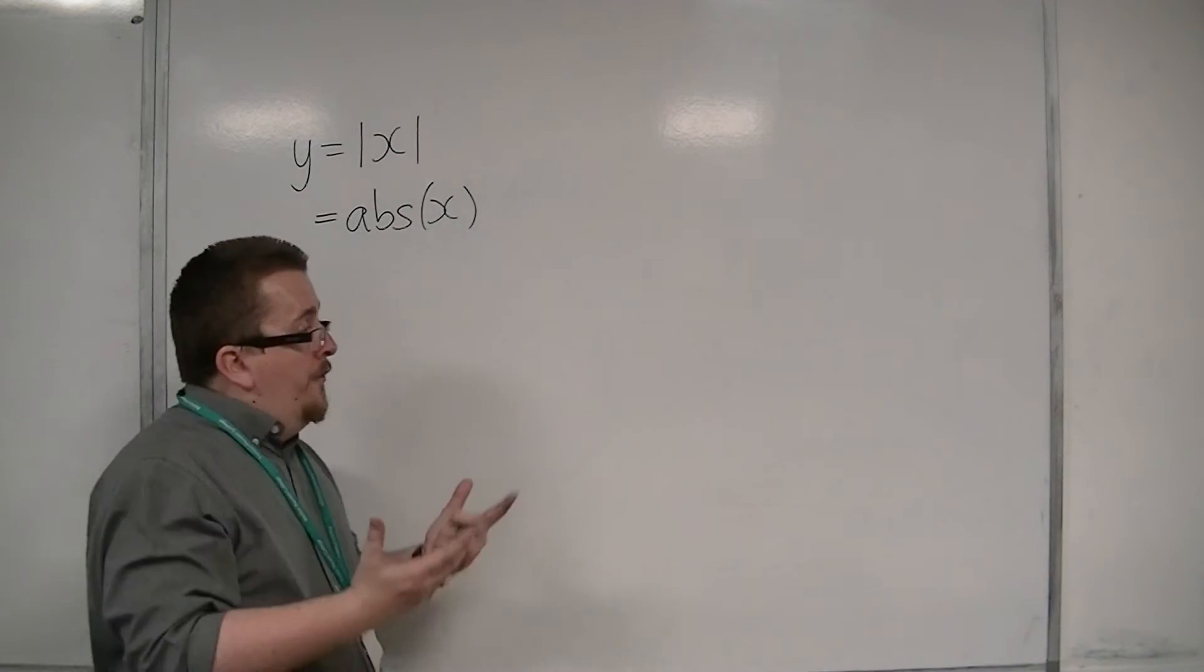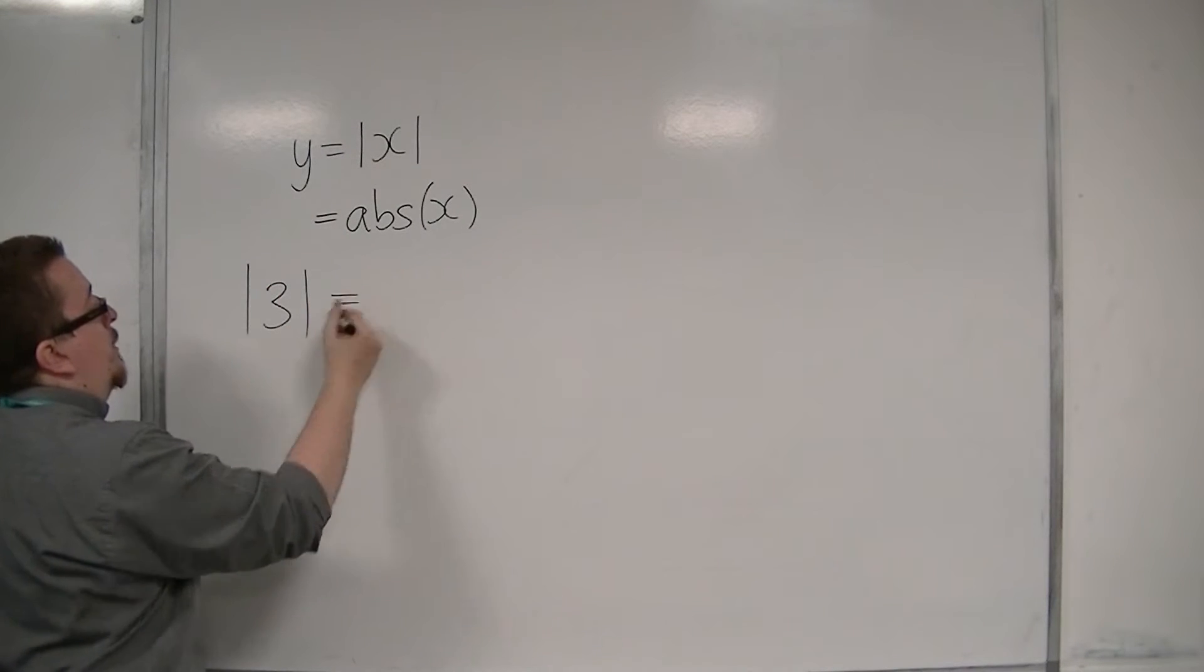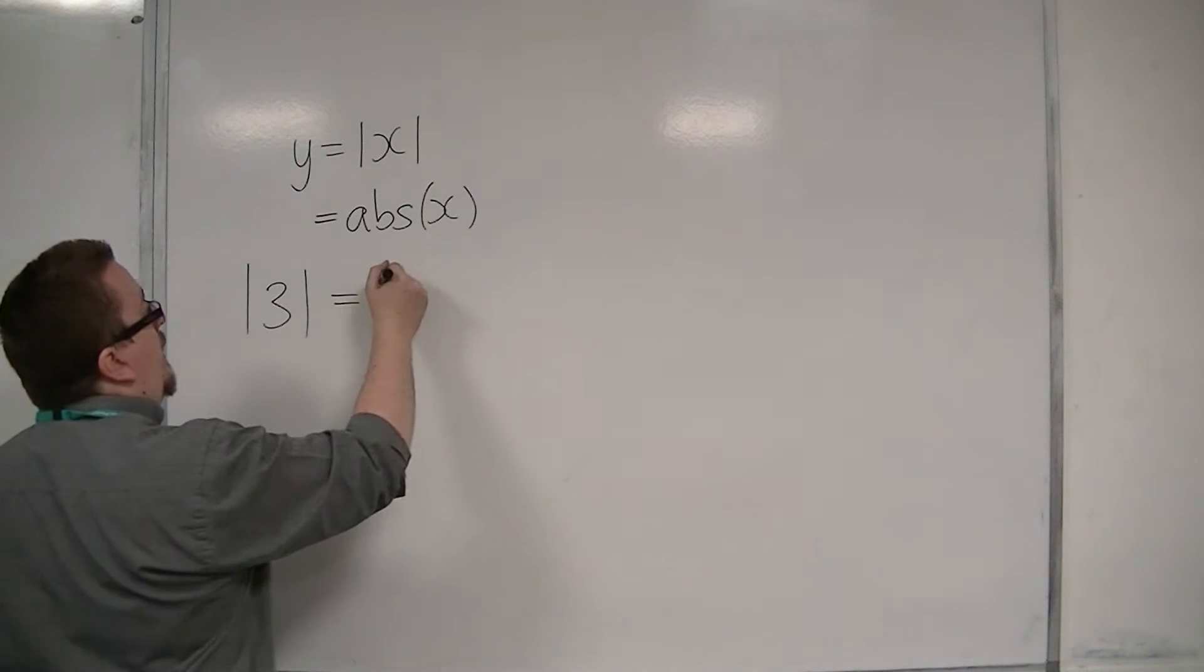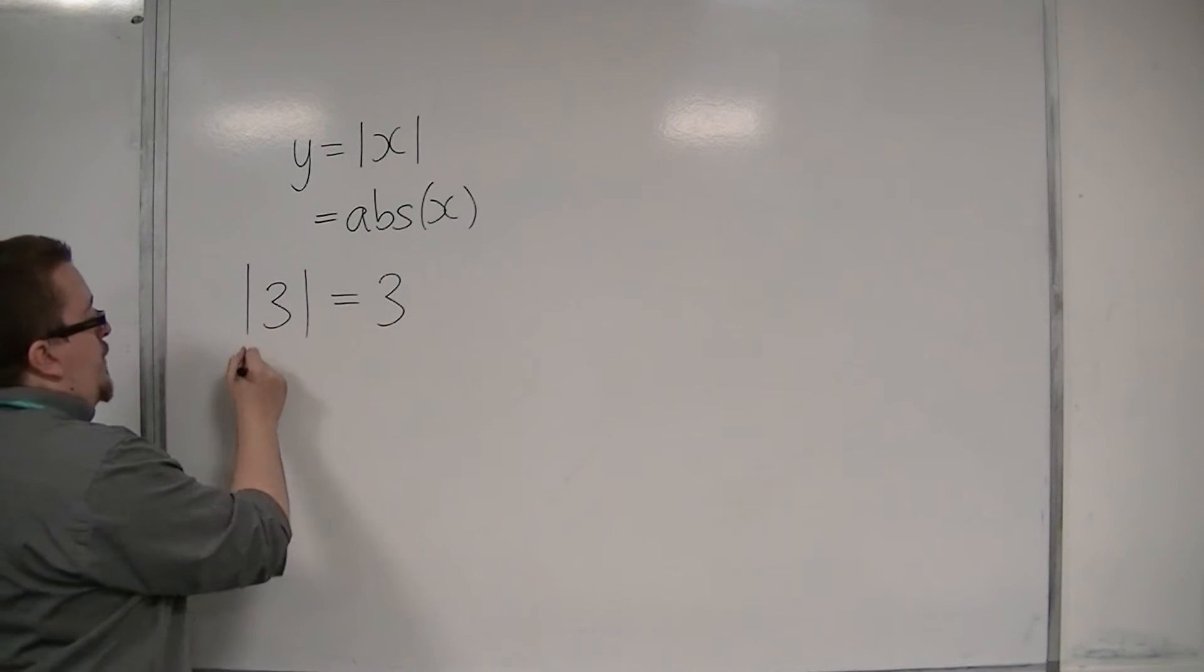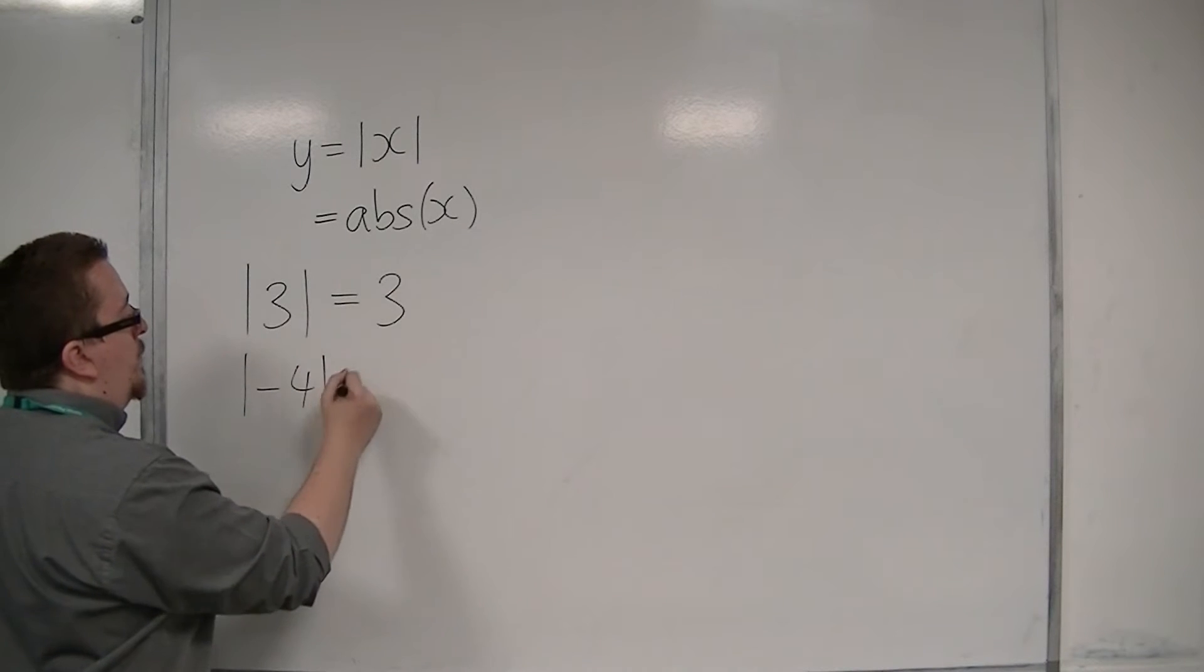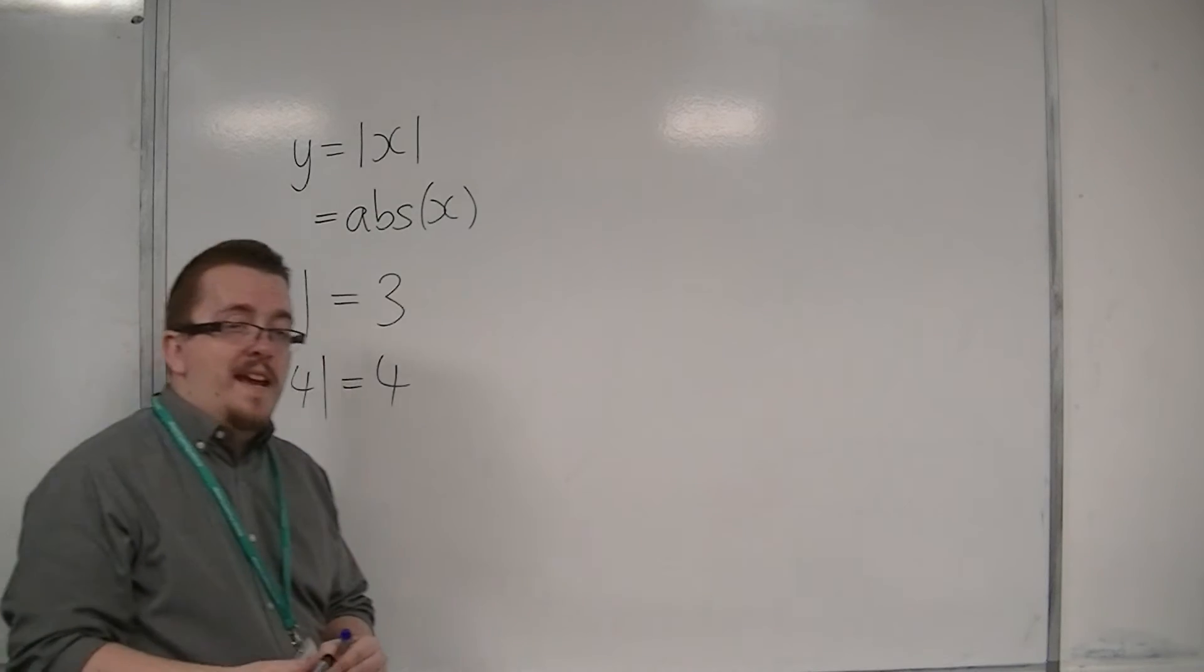For example, if you found the modulus of the number 3, well, 3 is already positive, so it would output just 3. If you were looking at the modulus of minus 4, that would just be 4. So it gets rid of the negative.